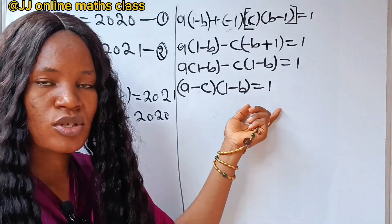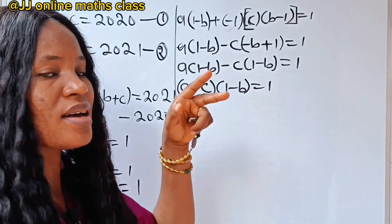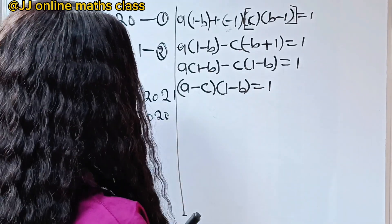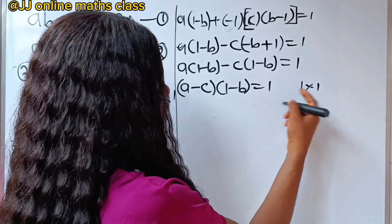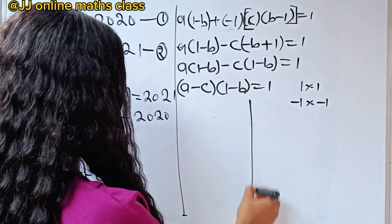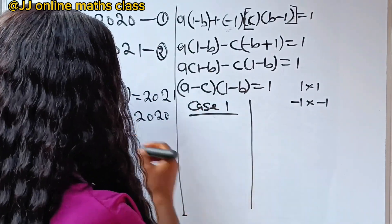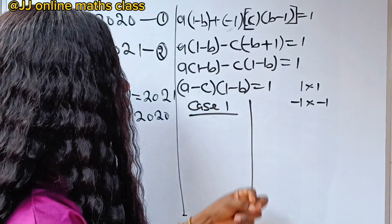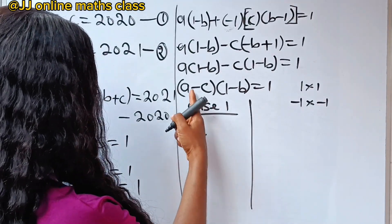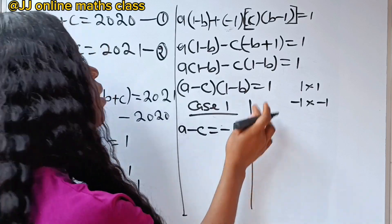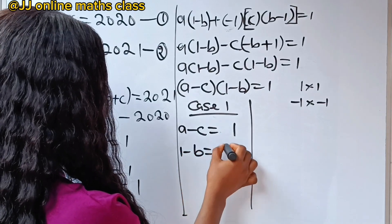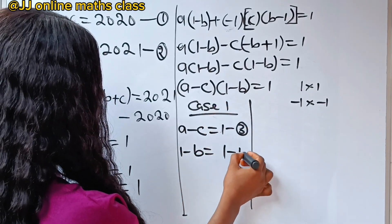Now, remember we are told that A, B, and C are integers. If that is the case, then there are two possible values. Since 1 equals 1 times 1, and 1 also equals minus 1 times minus 1, we have two cases. Case 1: A minus C equals 1 (equation 3) and 1 minus B equals 1 (equation 4).